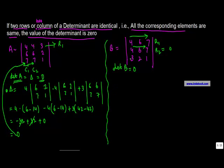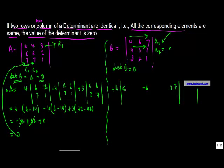Let's similarly verify for the rows using matrix B. Expanding along row one with elements 4, 6, and 7. The signs are plus, minus, plus. For element 4: (6×1 − 7×2) = 6 − 14 = −8.